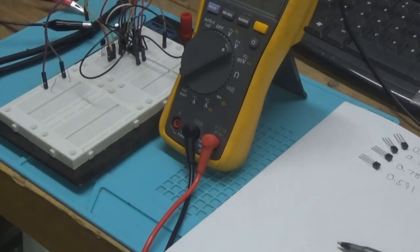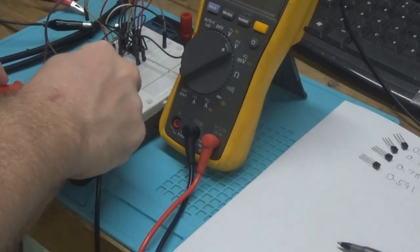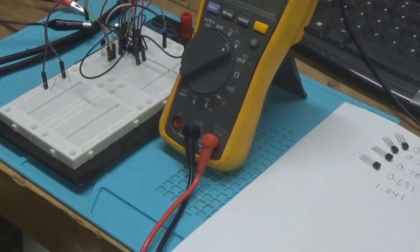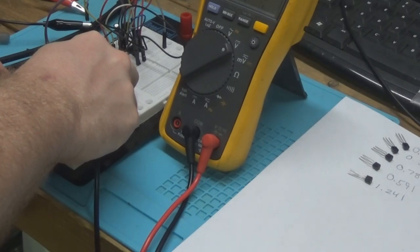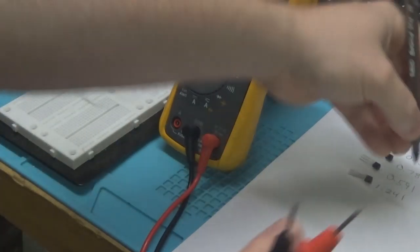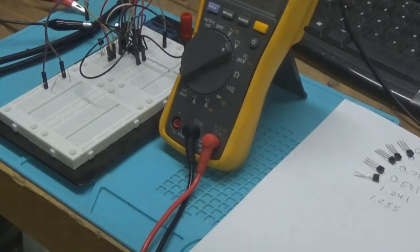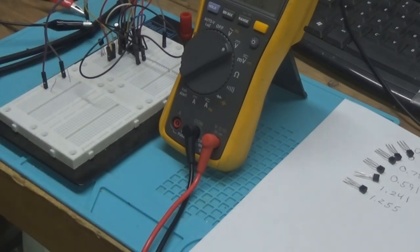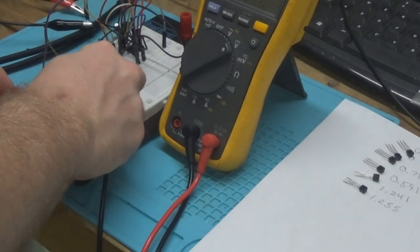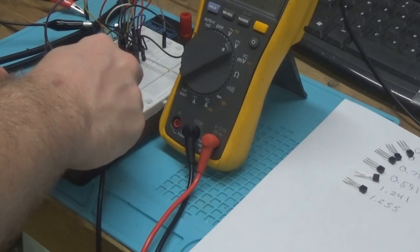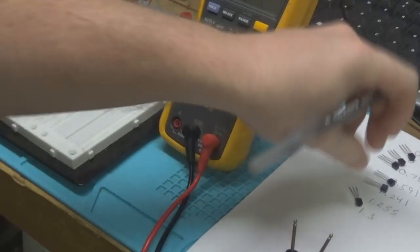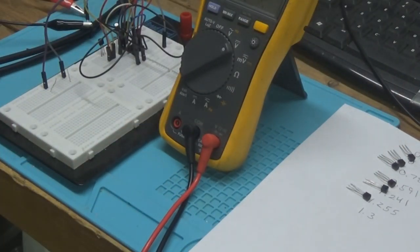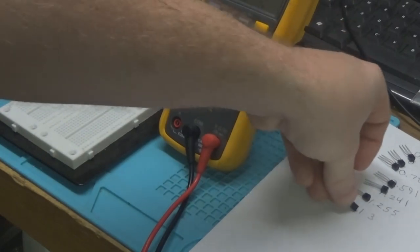Let's try these. 1.241. 1.255. That's pretty close on those two. 1.3 flat. 1.3 volts flat. Try not to mess the order up here. I think we got ourselves a good set all of a sudden.